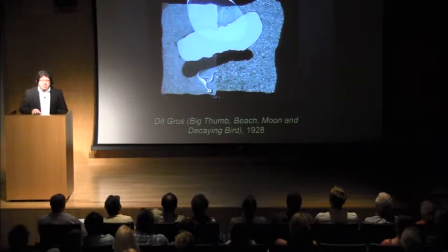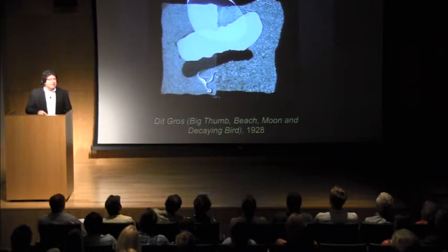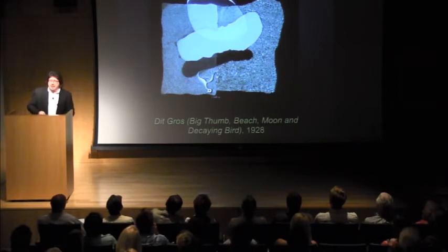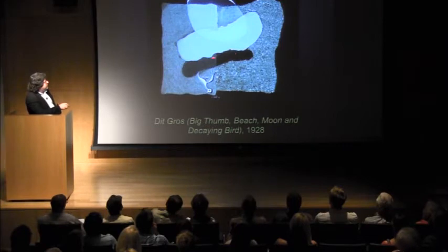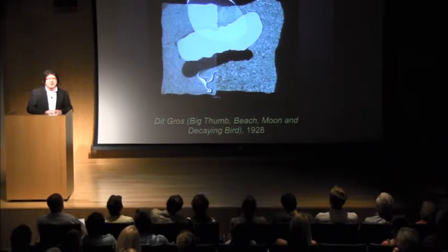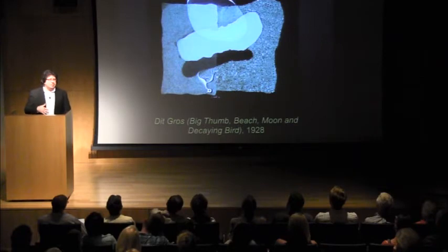By about 1928, a little before he became a surrealist, Dali went through a period of experimentation and became very fascinated by the fact that you could have very loose abstract forms that could be read in multiple ways. For example, this painting from our collection called Big Thumb, Beach, Moon, and Decaying Bird — the central form could be a big thumb, a big toe, a loaf of bread, a phallus, or a variety of different things all simultaneously. He was really open at this moment in his life to the idea that forms could have multiple ways of being read.